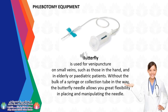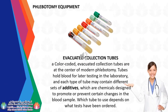The evacuated tube system: You will use a multi-sampling needle and an evacuated collection tube. To ensure a firm, stable connection between these two essential parts, a needle adapter — also called a tube holder — is used. A needle adapter is a translucent plastic cylinder; one end has a small opening that accepts the multi-sampling needle. Evacuated collection tubes are color-coded and are at the center of modern phlebotomy. Tubes hold blood for later testing in the laboratory, and each type of tube may contain different additives, which are chemicals designed to promote or prevent certain changes in the blood sample.